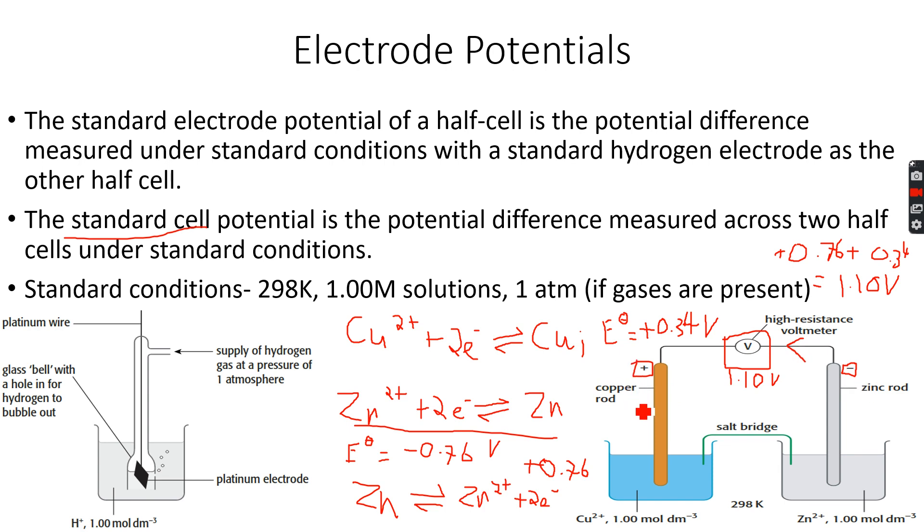Now that I have all these values, I have this equation and this equation, I can make an overall equation for this. The 2e- and 2e- will cancel out and this will become Cu2+ plus Zn gives Zn2+ plus Cu.